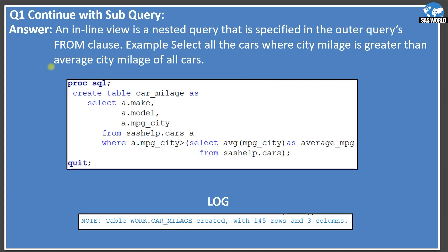We will rewrite this query to correct the problem. Everything in the SELECT is the same — car_mileage, make, model, MPG_City — but I am not including average_MPG this time. In the FROM clause, I use only one table, not a subquery or inline view. In the WHERE clause, instead of the inline view in FROM, I move that subquery to WHERE: where MPG_City is greater than (select avg(MPG_City) from sashelp.cars). This gives the average city mileage of all cars and compares it with each observation. Now the log shows no Cartesian product. This is not an inline view — that was the previous approach — but it solves the same question another way.